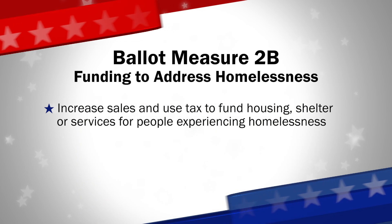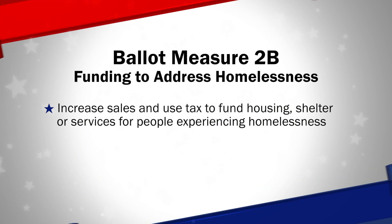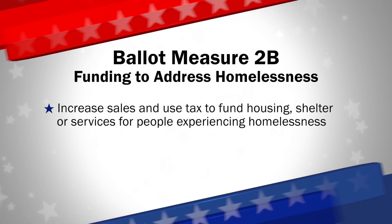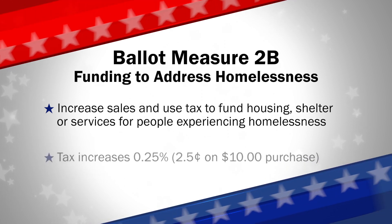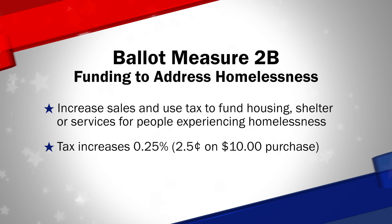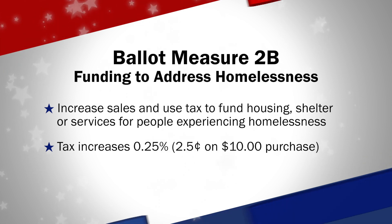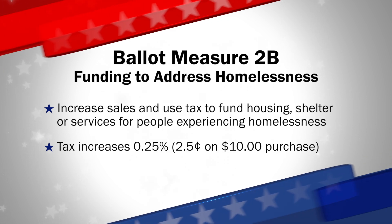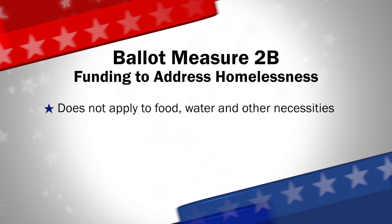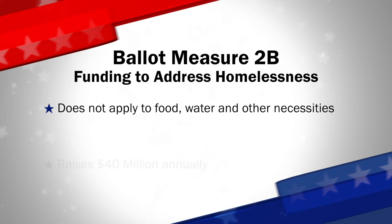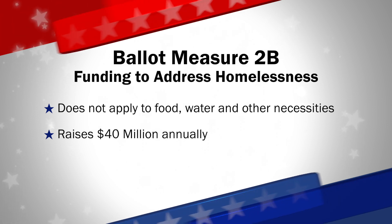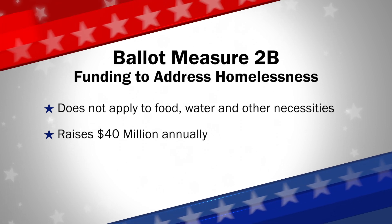Next up is Ballot Measure 2B, which asks if the city should increase sales and use tax to fund housing, shelter, or services for people experiencing homelessness. The tax would be 25 one-hundredths of one percent, equaling 2.5 cents on a $10 purchase. The tax would not apply to food, water, and other necessities, and is expected to raise $40 million annually beginning January 1, 2021.